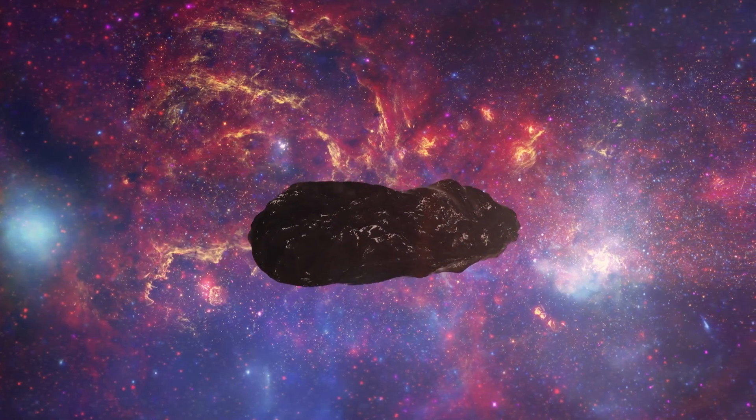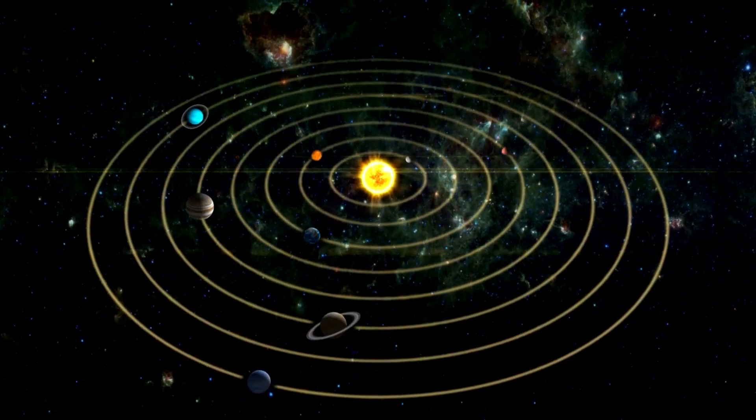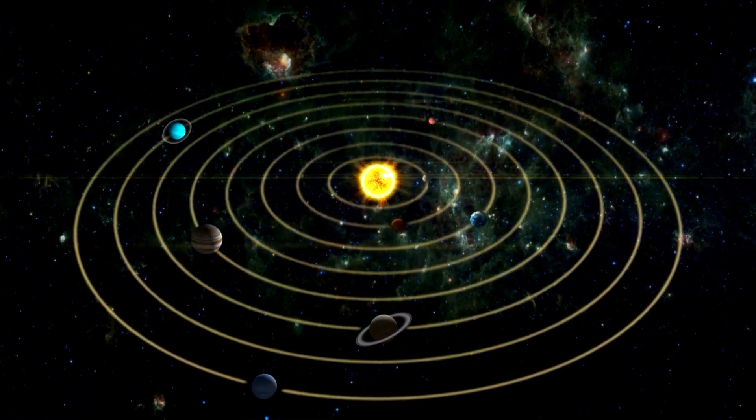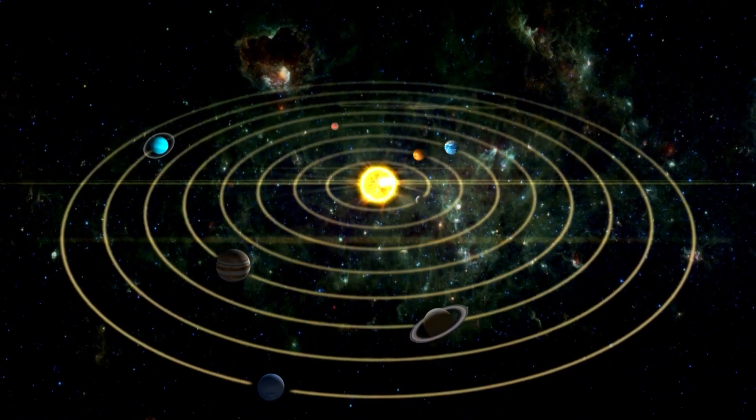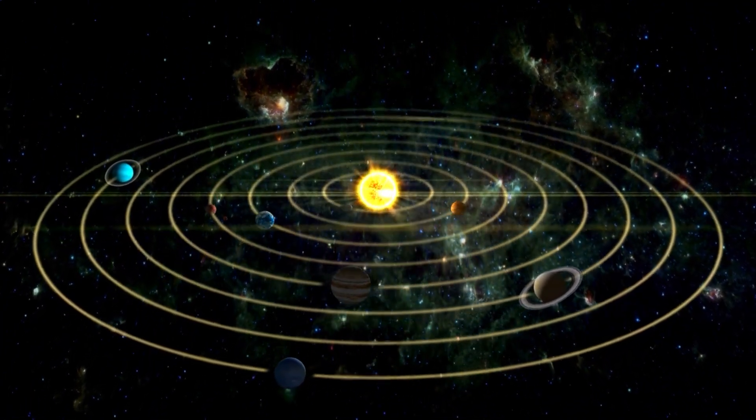The first interstellar object that has been recorded passing through our solar system is evidence that the interconnectedness that exists in the universe reveals a greater similarity between extraterrestrial worlds and our own than initially believed.